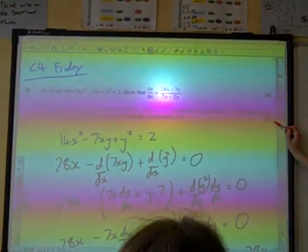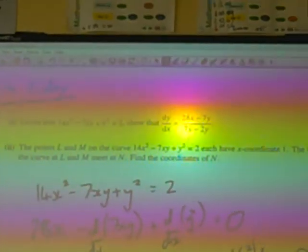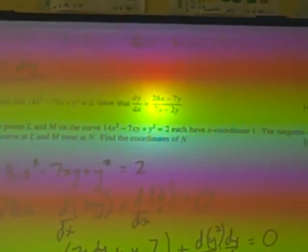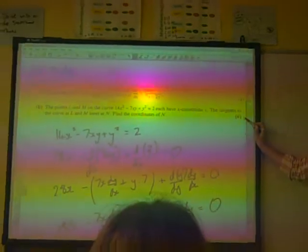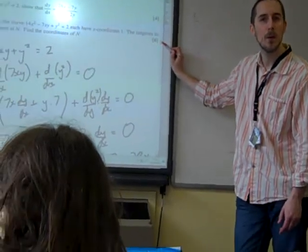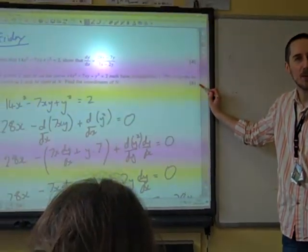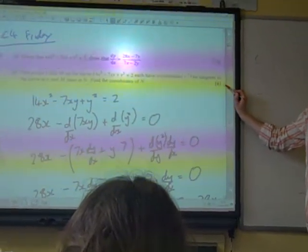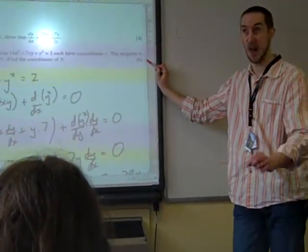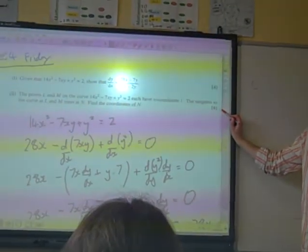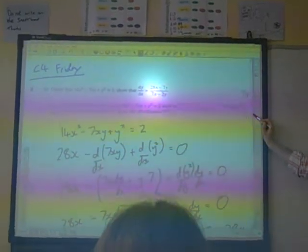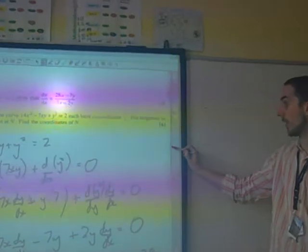Right, part B says the points L and M on the curve each have X coordinate 1. The tangents to the curve at L and M meet, and find the coordinates of A. So what do we need to do? We need to find the coordinates of the points L and M to start with. They're both where x equals 1. So what do we do next? Let's plug x equals 1 into the equation.